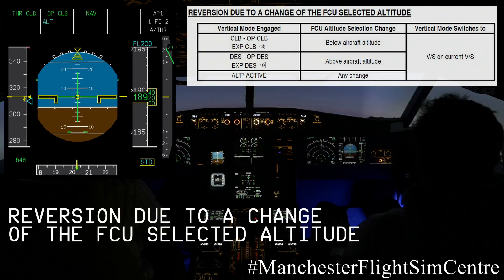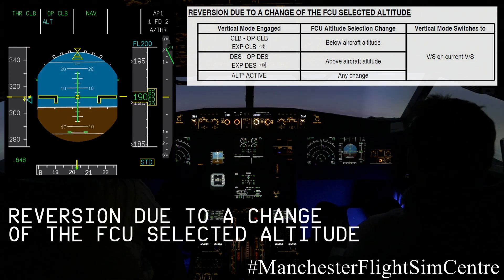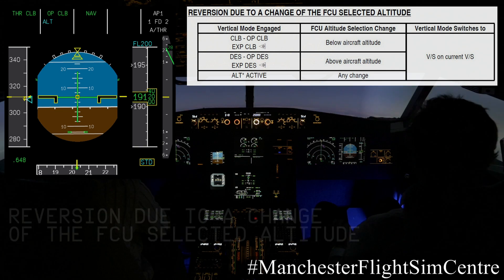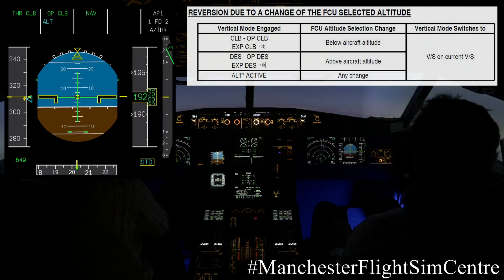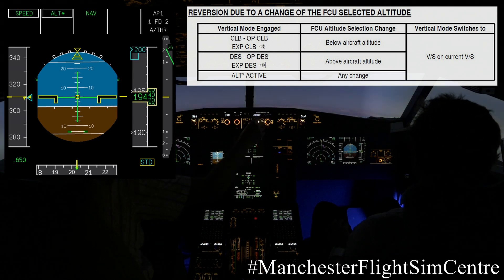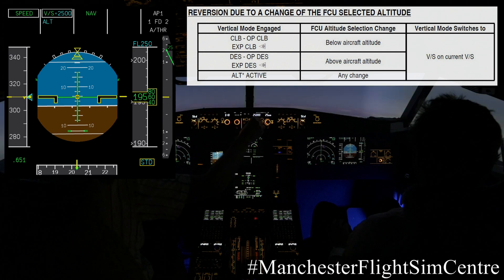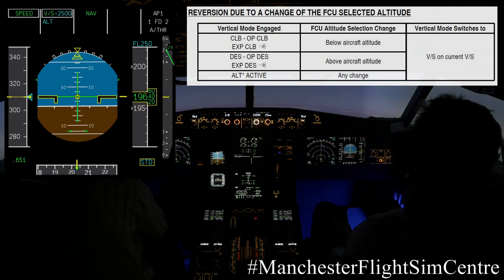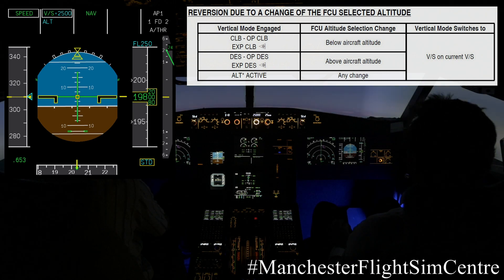This third example is probably the most common seen day-to-day. Currently climbing to flight level 200 in open climb, shortly we'll see the FMA change to speed and alt star. ATC then re-clears us to a higher flight level — flight level 250 — and again the aircraft reverts, now maintaining vertical speed plus 2500.